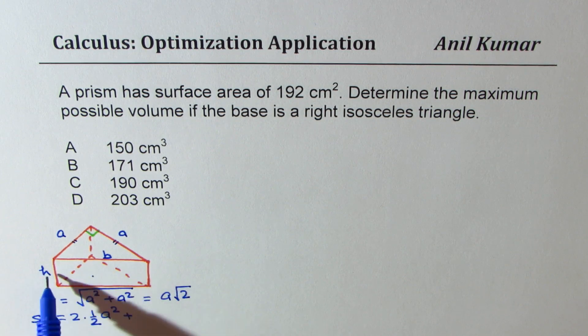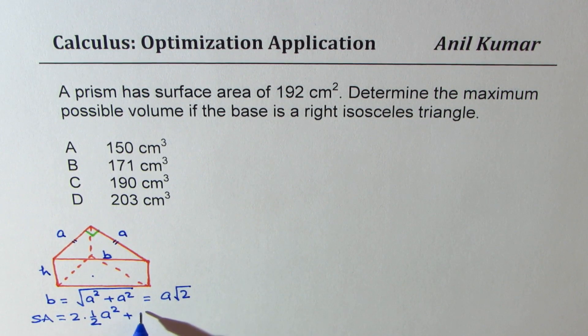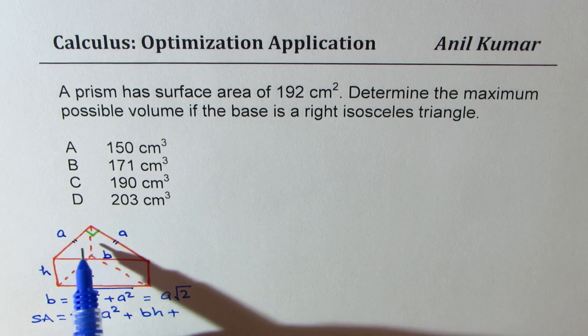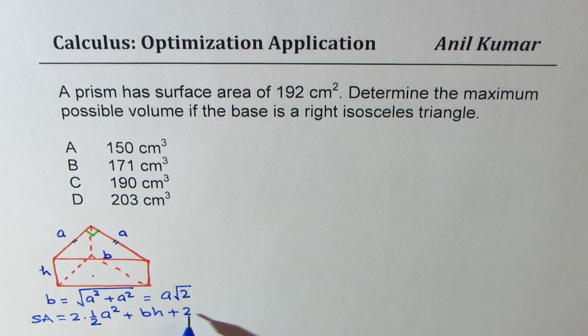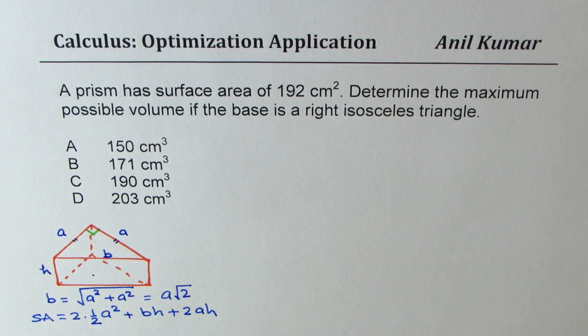So this is one rectangle base times height. So let's call this as b is a square root 2. Let's write b base times height plus the other two are a times height. So let me write this as 2 times ah. So that gives you surface area formula.